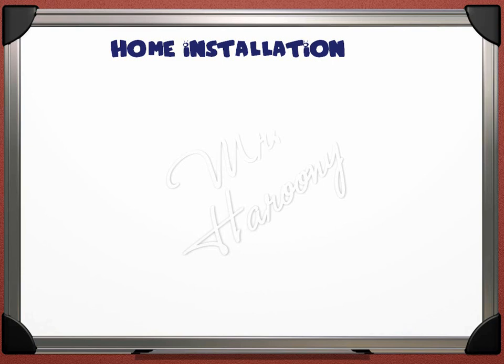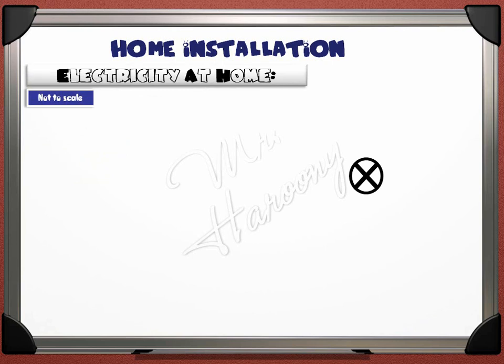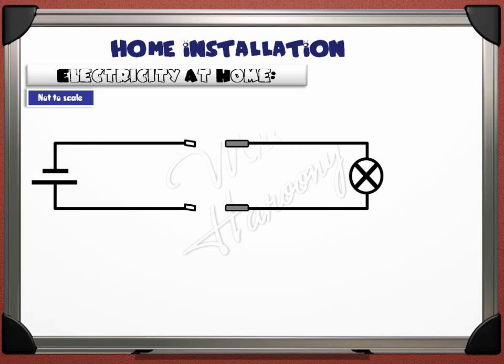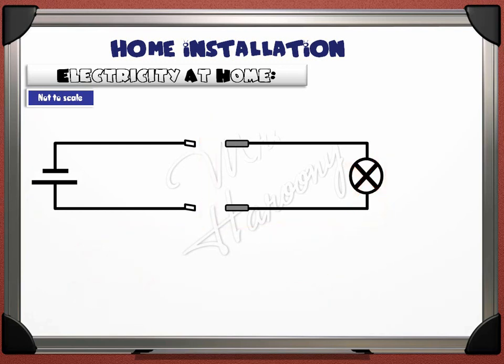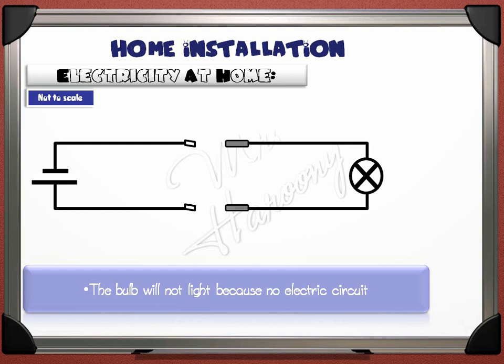The first title is Electricity at Homes. To understand how electricity is connected to our homes, let's first see this circuit. This is a bulb — an electric energy consumer — and an electric battery or power supply, which is an electric energy producer. The bulb has its two connections and the battery has its two connections. It's clear that the circuit is incomplete and the bulb is off. This diagram shows two half circuits.